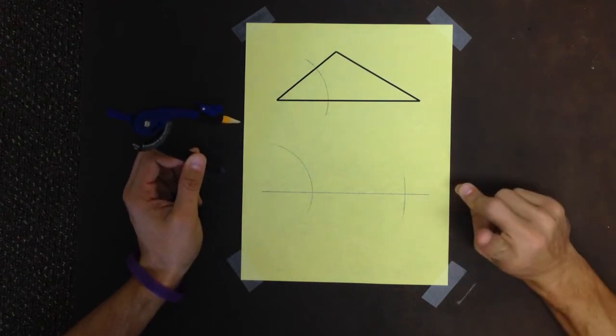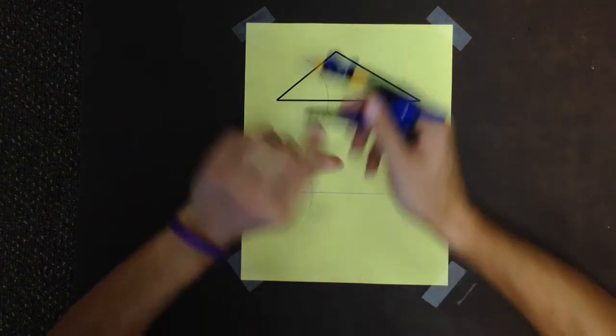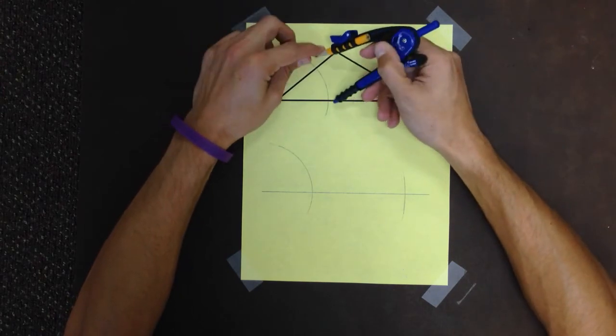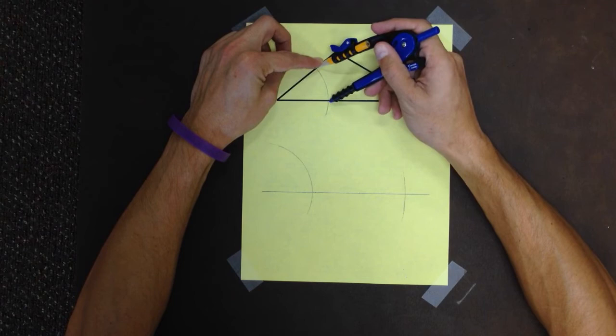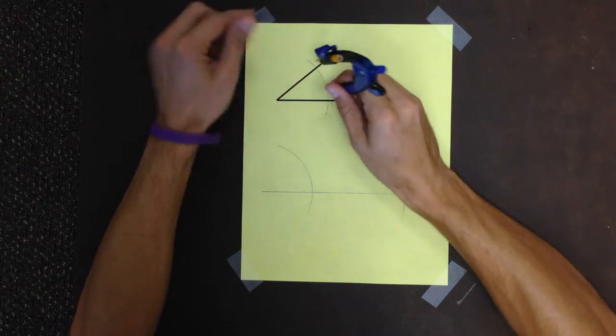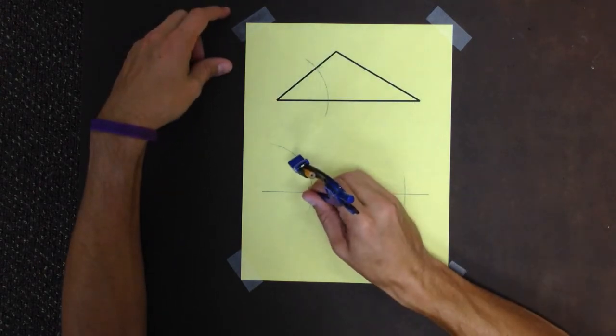Now, because we remember how to construct a congruent angle, we measure the distance from where the arc intersects both sides. So from there to there. And that distance there will be the same as this distance here.